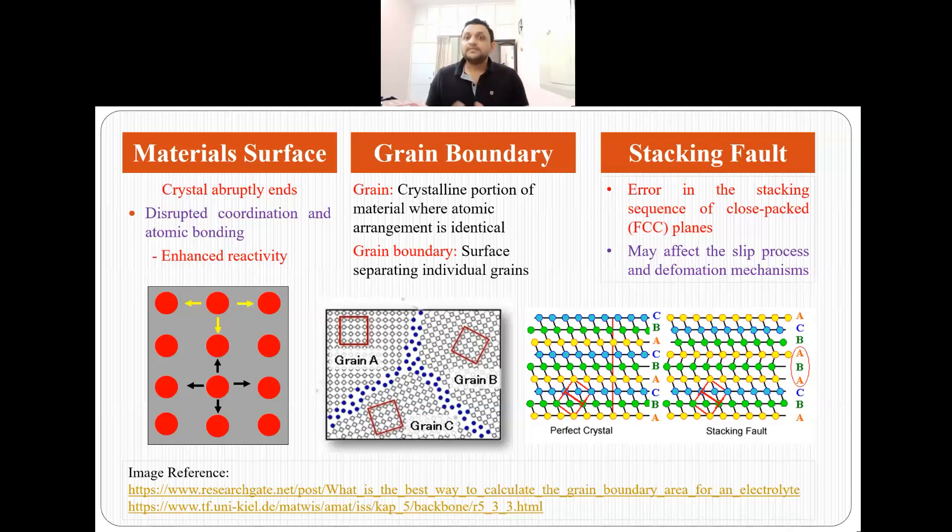Now the third type of surface defect is stacking fault. Suppose we have perfect crystals like this. There is CBA CBA kind of crystal structure and here instead of C plane we have A plane. There is some error in the stacking sequence.